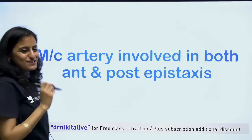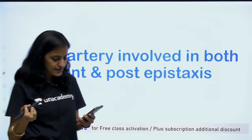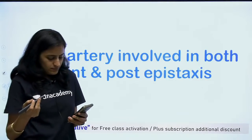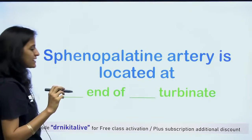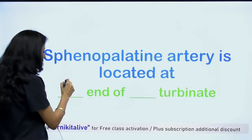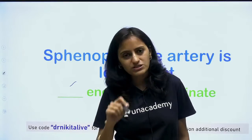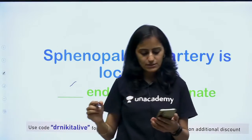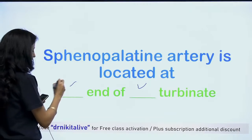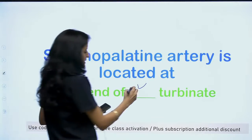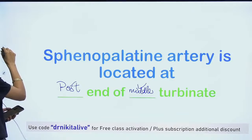The most common artery involved in both anterior and posterior epistaxis is your sphenopalatine artery. Where is it located? It is located at the posterior end of the middle turbinate. Cautle's test is done to look for the patency of the nasal valve — whether surgery for DNS will be successful or not. Basically, Cautle's test is done in patients of DNS to look for nasal valve patency.